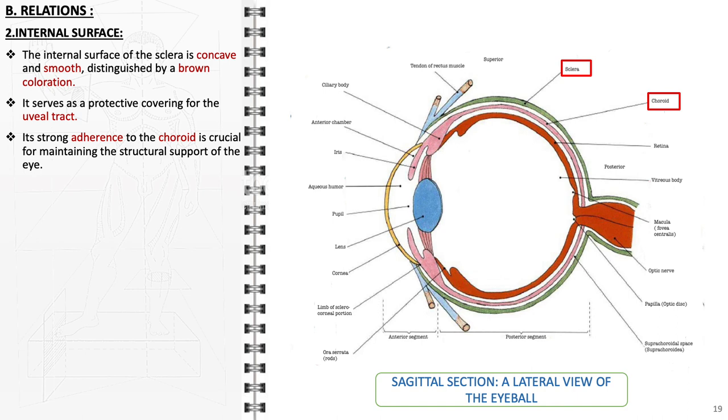The internal surface of the sclera contrasts with the external surface, being concave and smooth. It exhibits a brown coloration and serves a protective role for the uveal tract, which includes the choroid, ciliary body, and the base of the iris.